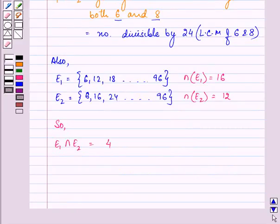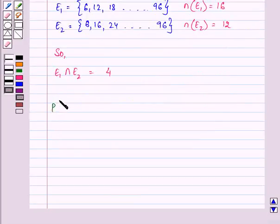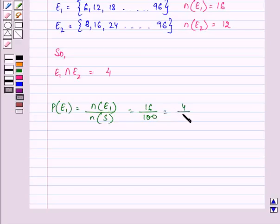Now, let us find out the probability of event 1 that is n(E1) upon number of elements in sample space that is 16 upon 100. That comes out to be 4 upon 25.